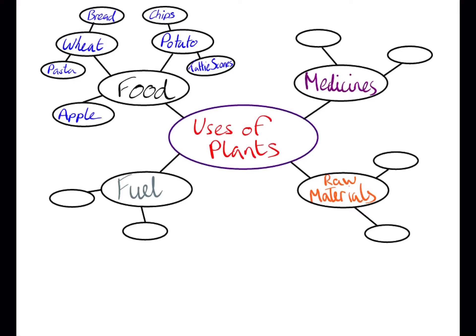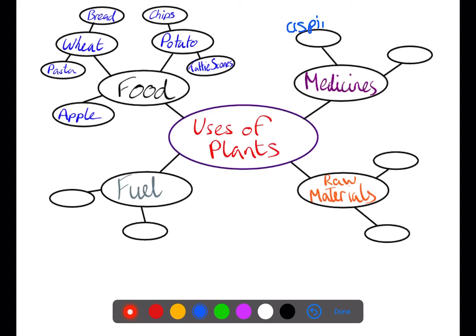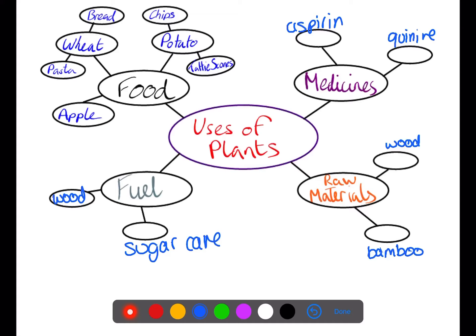We can put in a few examples of these different uses of plants. For medicine, there are some medicines we get from plants — one would be aspirin, which comes from willow trees, and quinine, which is used to treat malaria. For raw materials we would have things like wood as a building material and bamboo to build furniture. For fuels you could use wood directly to burn, or sugarcane which can be turned into alcohol and used in place of petrol in cars.